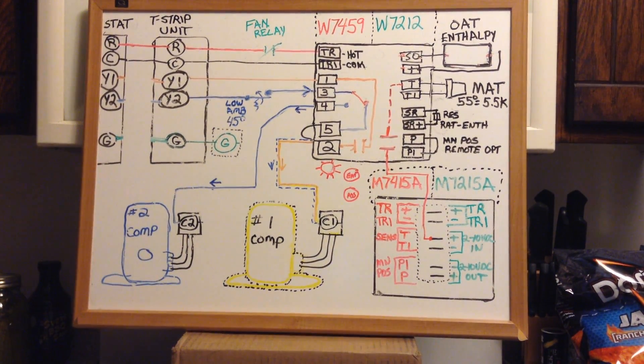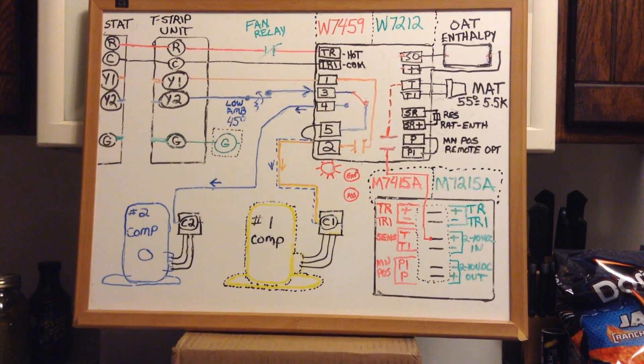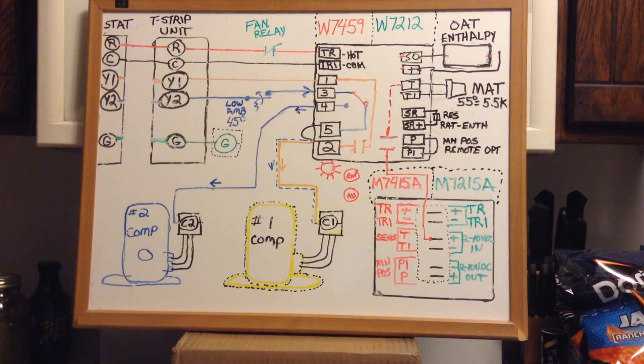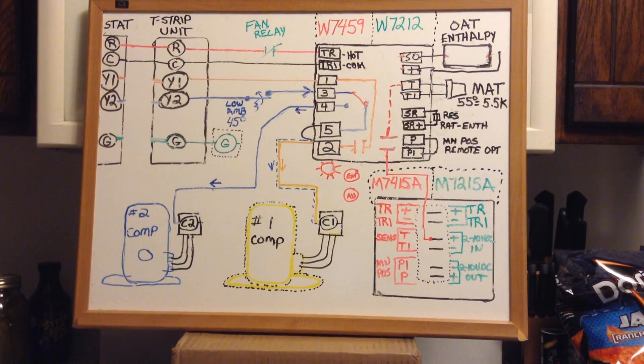All right, I've got a little training video here for economizers. Basic operation is what I'm going to try to cover here tonight. Assume this is a Carrier rooftop unit with Honeywell economizer, black box motor, and the black logic modules. Most of these are obsolete now, but they're all over in abundance on the roof, so we're still working on them every day.